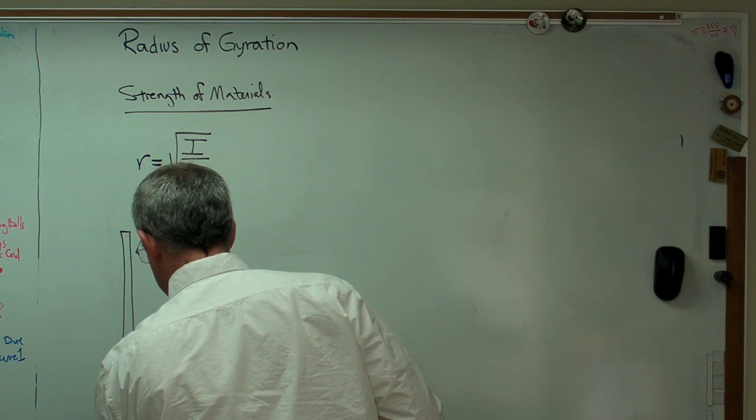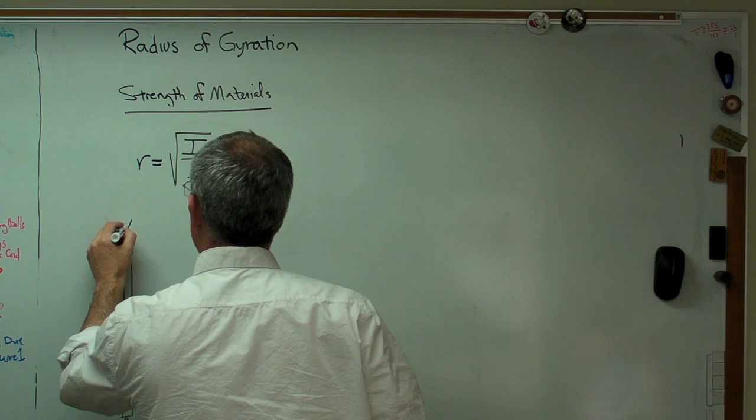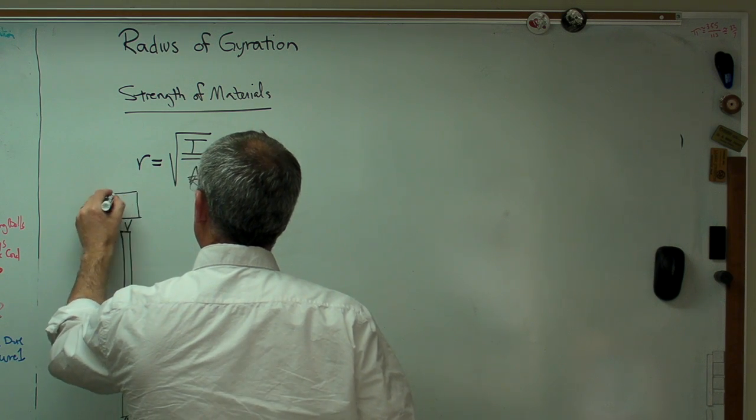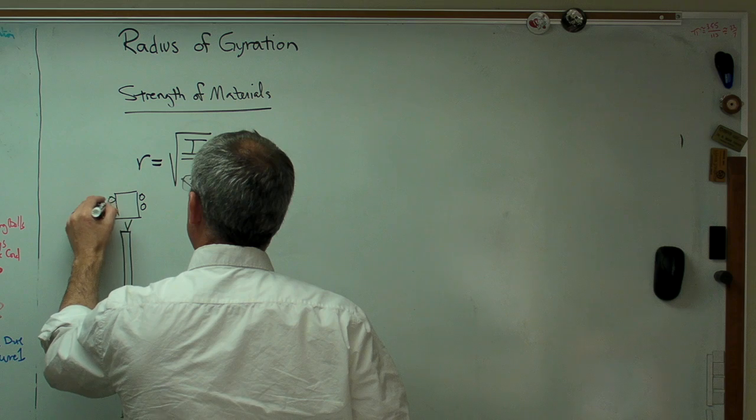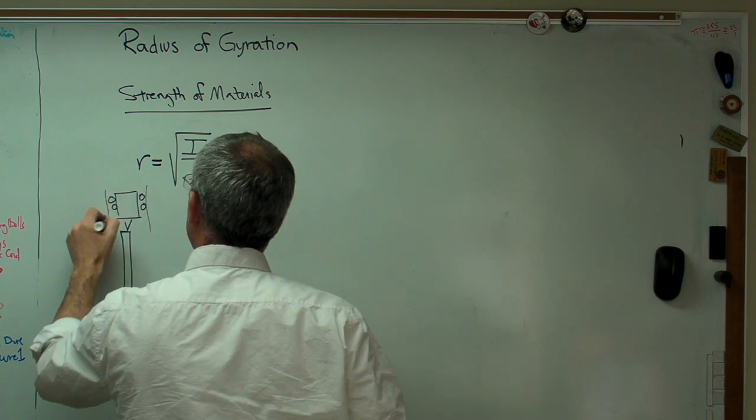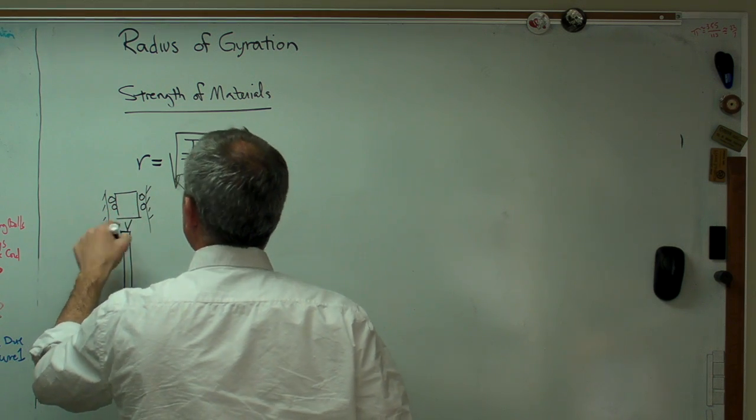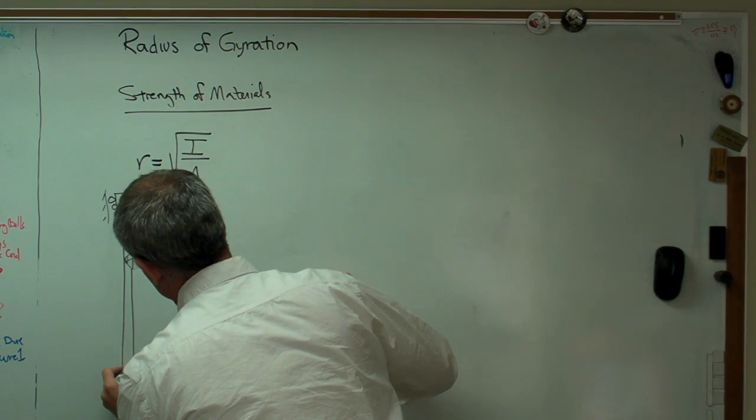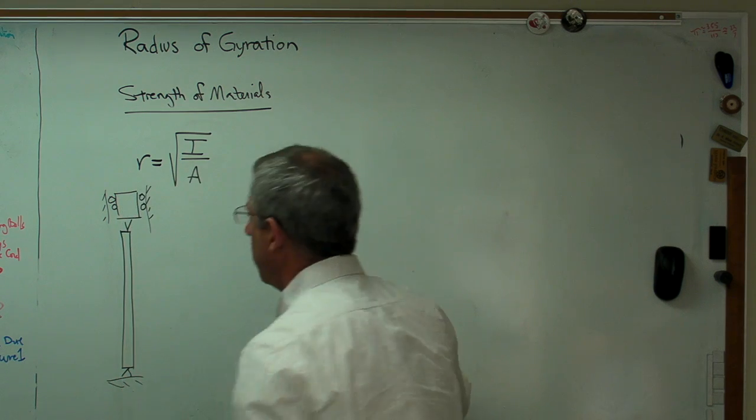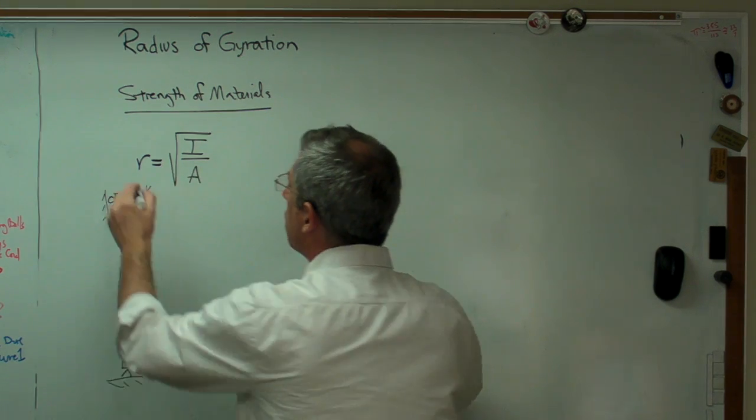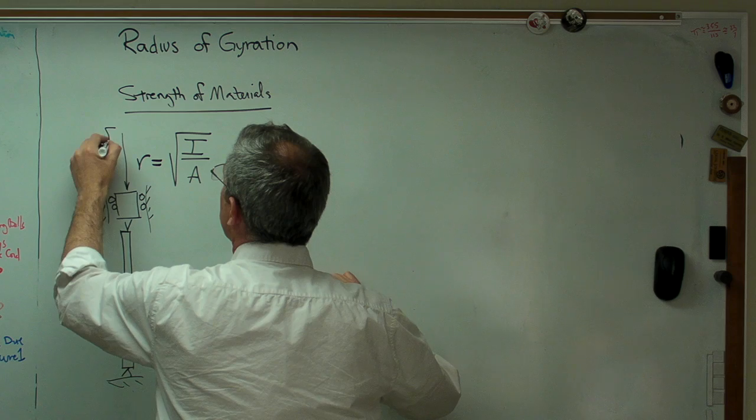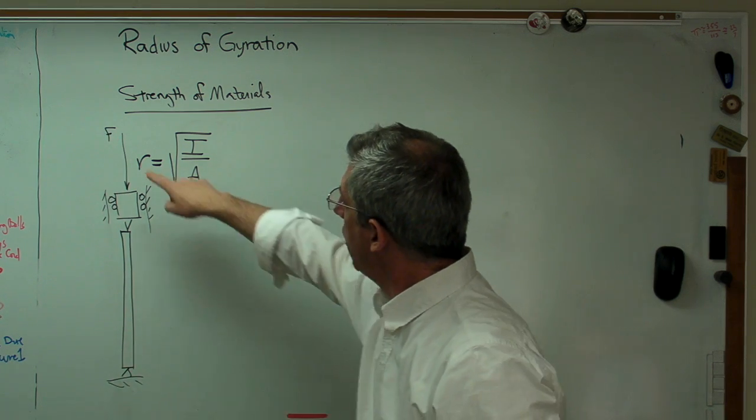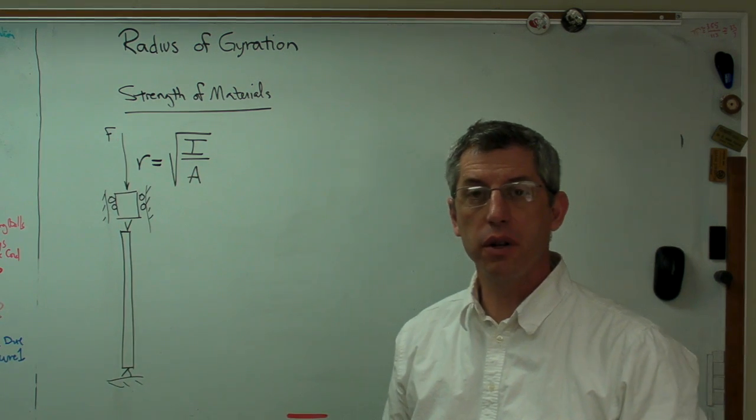So let's say I've got a pin-ended column. I'm drawing this pretty fast here. Okay, the column is pinned on both ends. Okay, I guess you can't really see that. Let me do this. There you go, pinned on both ends. And there's a force here, and I'll call that force F. If that force is big enough, this column is going to buckle.